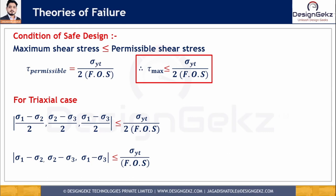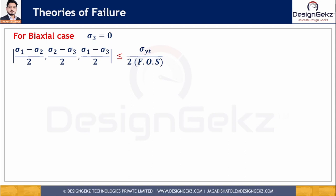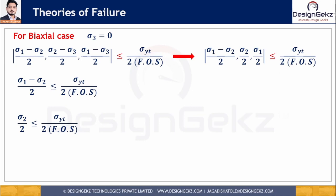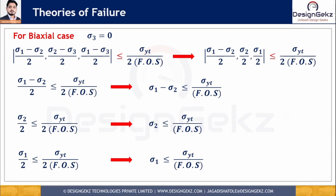For biaxial stress, σ3 = 0, so the conditions simplify to: (σ1 − σ2)/2, σ2/2, σ1/2 ≤ σ_yt / (2 × FOS). This gives: σ1 − σ2 ≤ σ_yt / FOS, σ2 ≤ σ_yt / FOS, and σ1 ≤ σ_yt / FOS.